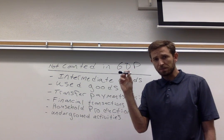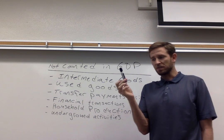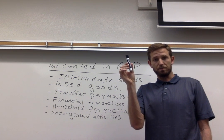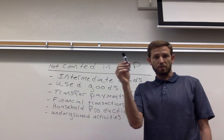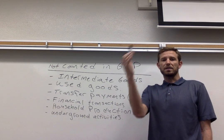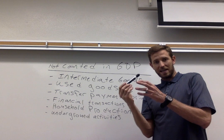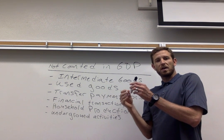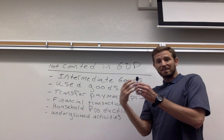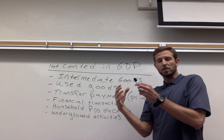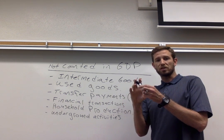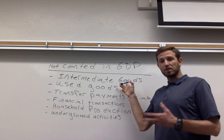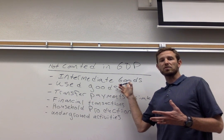For GDP calculation purposes, we're only going to include the final purchase price of the item, which would be the price that a consumer pays for this pen, and leave out the cost of the plastic and the ink that Expo, the pen maker, undertakes — because it's thought that that final purchase price from the consumer accounts for all those intermediate products. So we don't want to count these intermediate goods, those items that are going to be used as a component in producing something else.